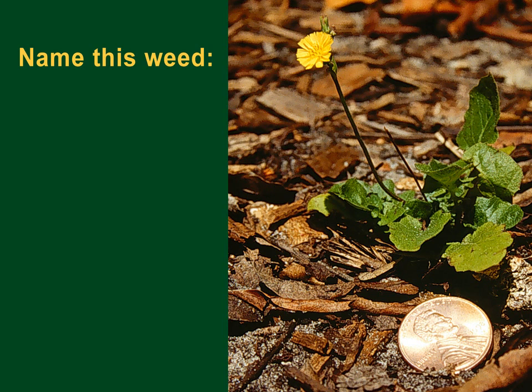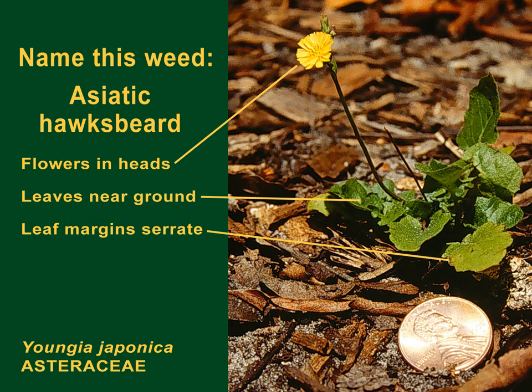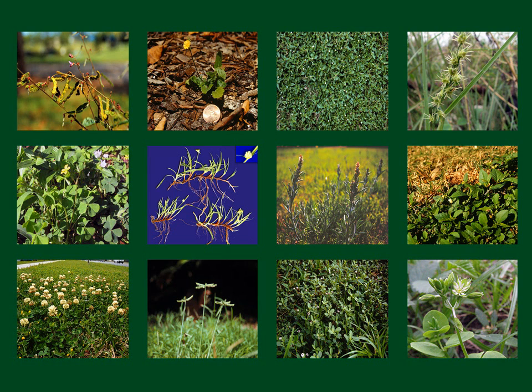This little weed is cute, but it can be a real problem in the landscape. The flowers are in heads, the leaves emerge near the ground initially in a basal rosette, and the leaf margins are serrate. It is Asiatic hawksbeard. That completes a set of 12 weeds for which we've learned in more detail some of the distinguishing characteristics.